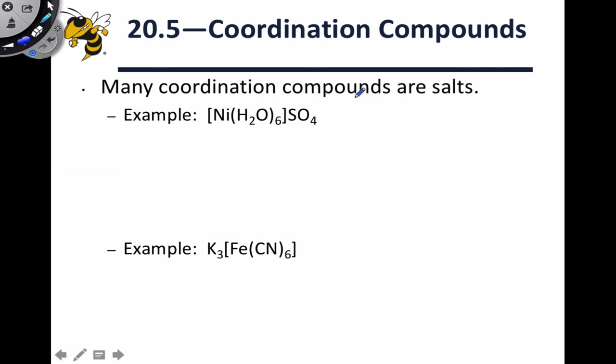Another way to state this same point is that many coordination compounds are salts. This means that the complex part, the part containing the metal ion and the ligands that are coordinately covalently bonded to it, has a charge. That charge is counterbalanced by the counterions. But very often those counterions, at least theoretically, have lone pairs.